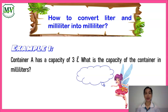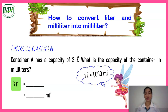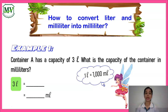Container A has a capacity of three liters. What is the capacity of the container in milliliters? We know that one liter is equal to one thousand milliliters. To change liters to milliliters, we simply multiply the liters by one thousand. Let's see how.